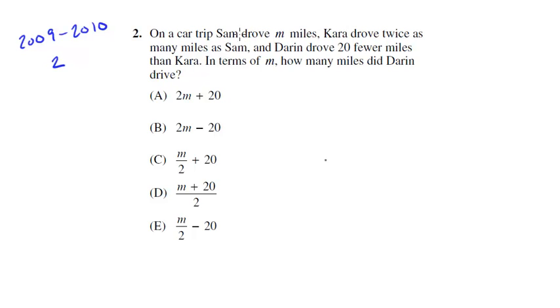On a car trip Sam drove M miles, Cara drove twice as many miles as Sam, and Darren drove 20 fewer miles than Cara. In terms of M, how many miles did Darren drive? Now you know to use plugging in when your answers are variables. That's going to be a pretty good sign to you on any problem. It doesn't just have to be a straight-up algebra problem. It could be a geometry problem that has letters in the answer choices. You know it's going to be a pretty good candidate problem for plugging in. So how does it work? Well, basically, it's how it sounds. For M, pick a number. Pick a number that's useful. Some numbers will be easier to use than others, so I wouldn't put in like 31 here. But like 10, pick good numbers. Avoid 1, avoid 0. Sometimes they can make things a bit weird.